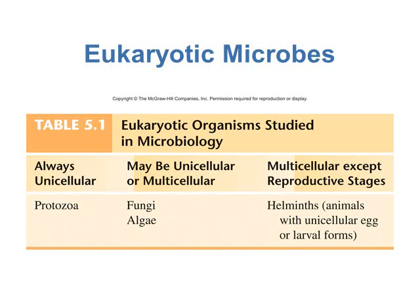Other eukaryotic microbes that may be unicellular or multicellular include the fungi, which are in the kingdom fungi, and the algae, which are plant-like organisms but not quite plants. A third category includes multicellular eukaryotic organisms in the animal kingdom — these are the helminths, or parasitic worms. They're officially animals, with a unicellular egg, larval forms, and adult stages. They usually reproduce sexually; a few may reproduce asexually.